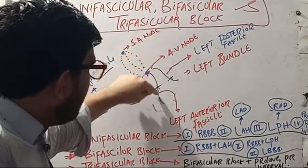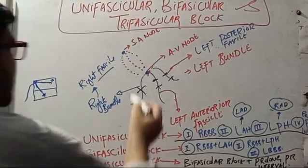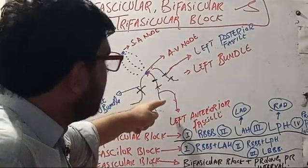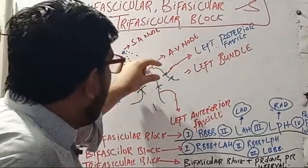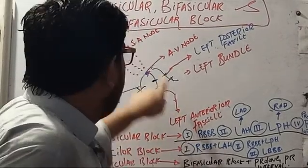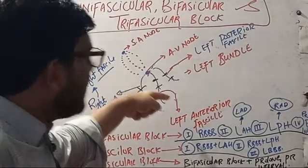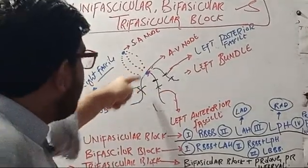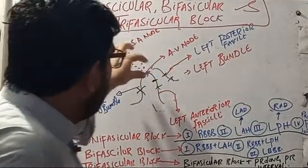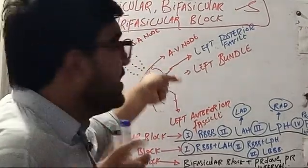What is meant by bifascicular block? If two fascicles are blocked. The left anterior fascicle and left posterior fascicle together make the left bundle, and the other is right bundle. So if two fascicles are blocked — RBBB with left anterior fascicle block, RBBB with left posterior fascicle block, or both left fascicles blocked — this is bifascicular block. RBBB plus left anterior hemiblock gives left axis deviation, so RBBB with left axis deviation is bifascicular block. RBBB with right axis deviation is also bifascicular block. LBB alone is bifascicular block because both left anterior and left posterior fascicles are blocked.